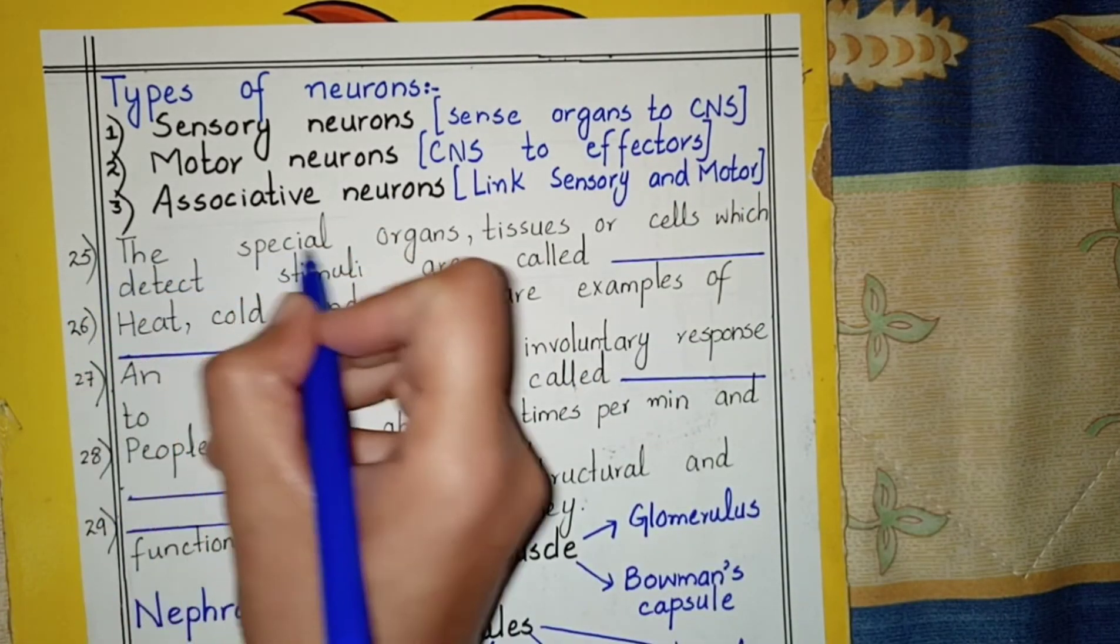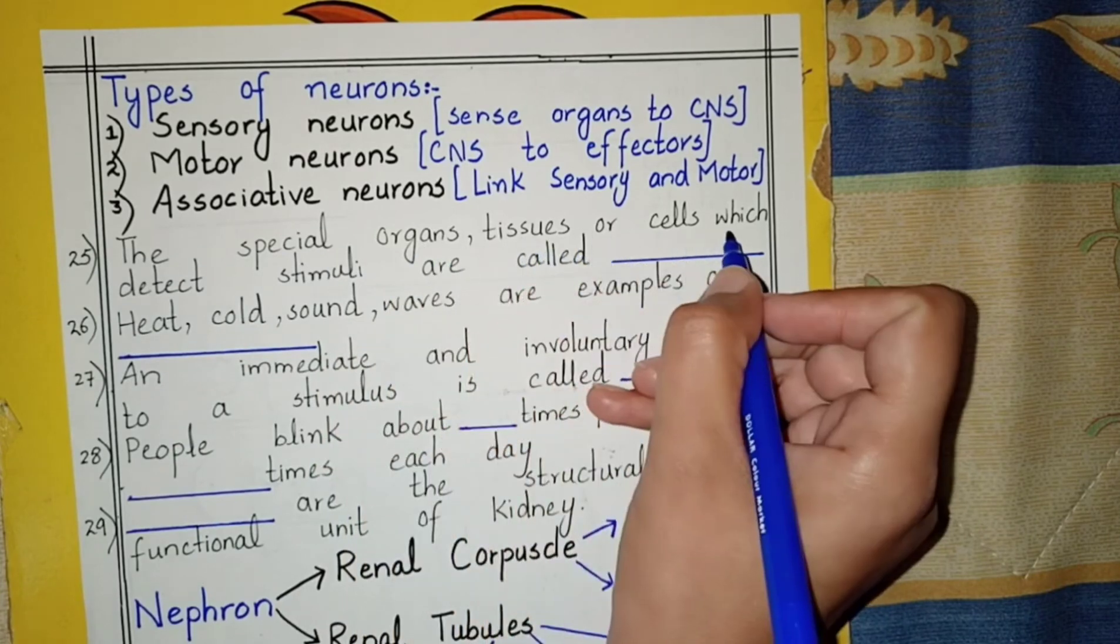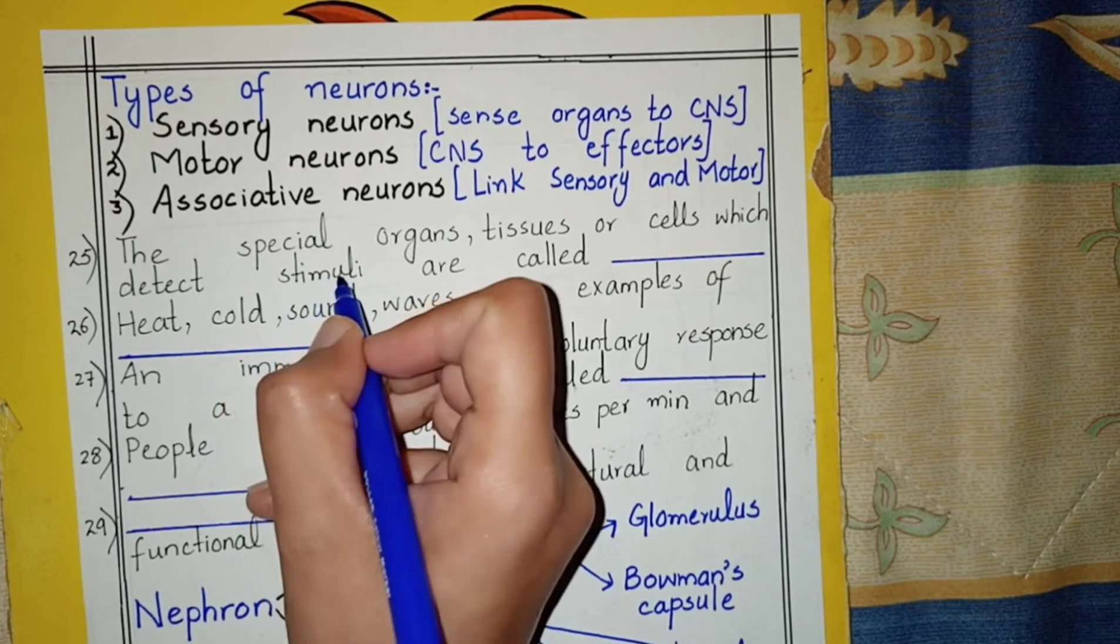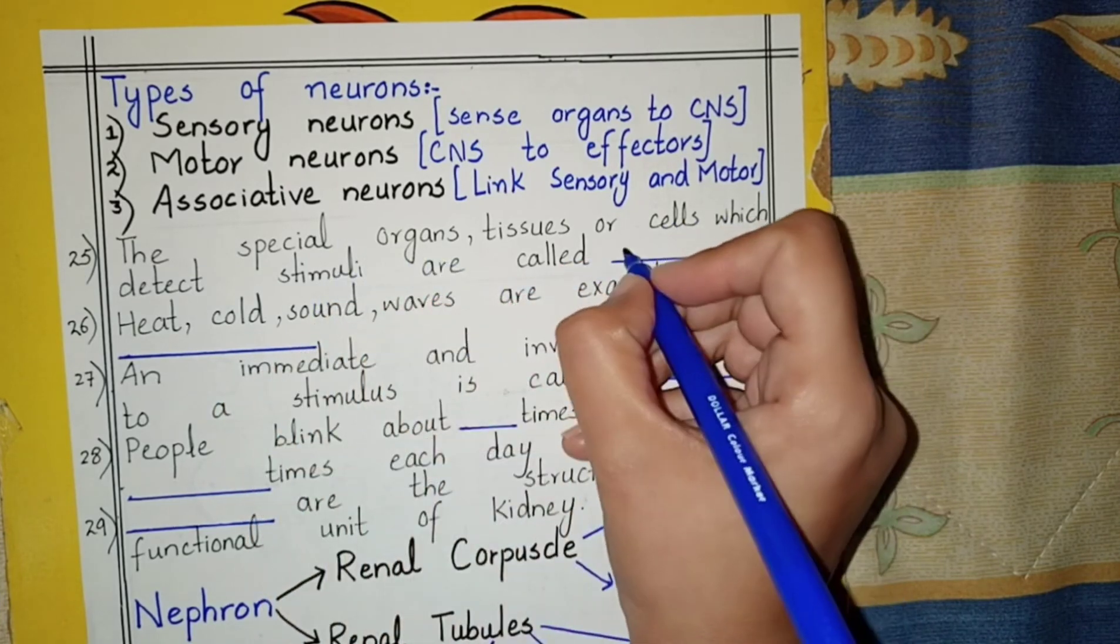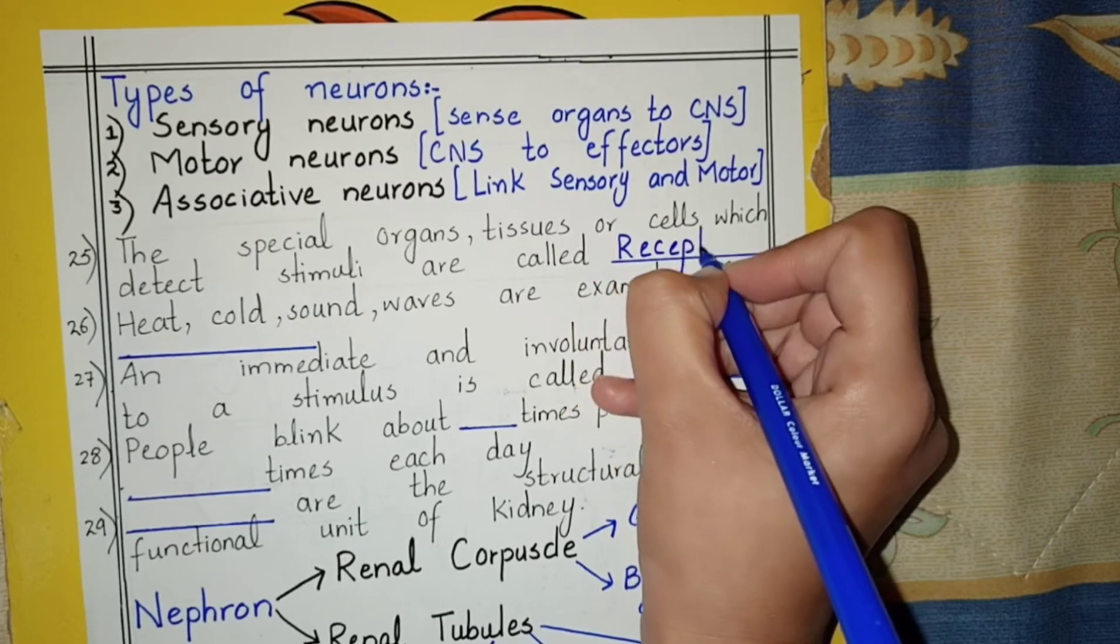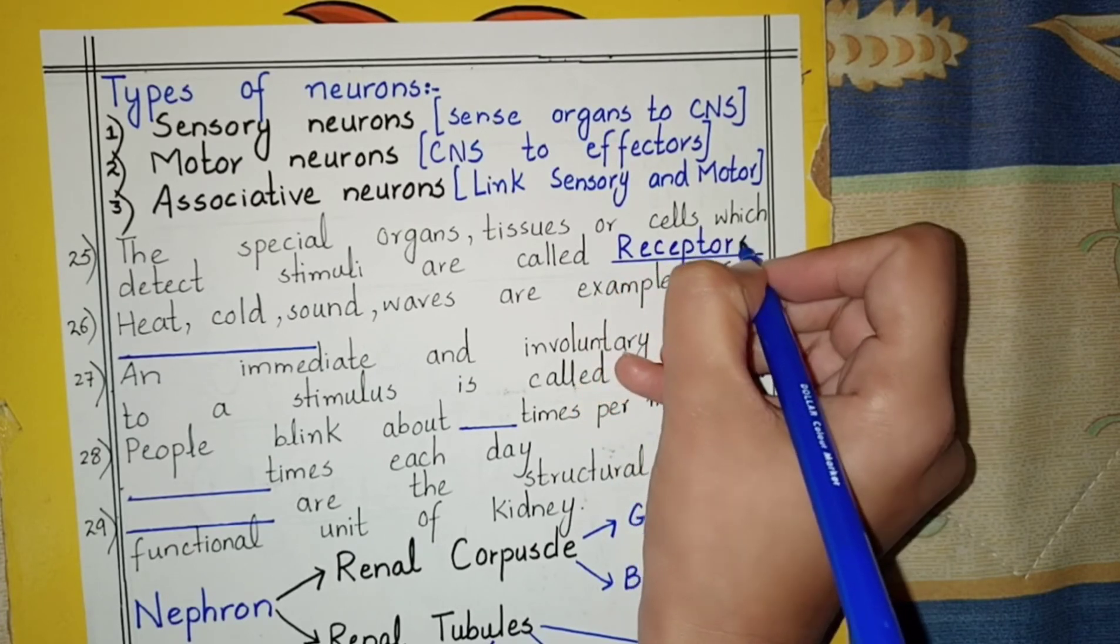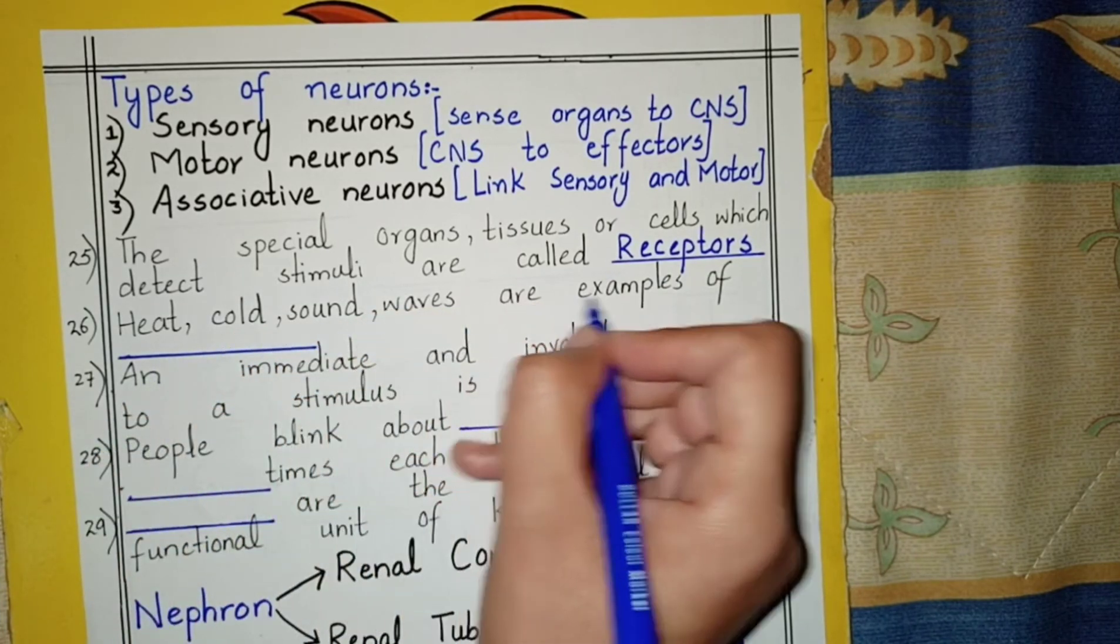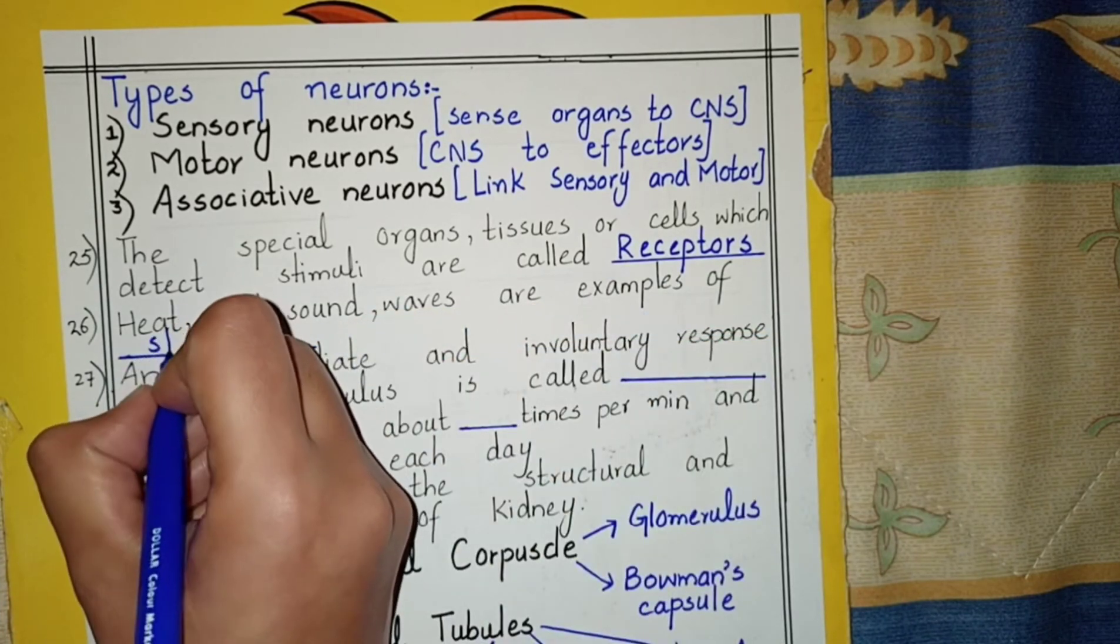The special organs, tissues, or cells which detect stimuli like heat and cold are called receptors. Heat, cold, and sound waves are examples of stimuli.